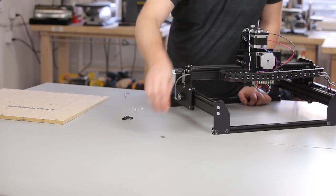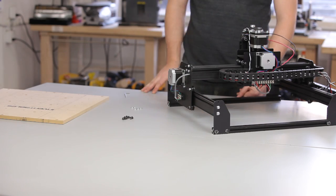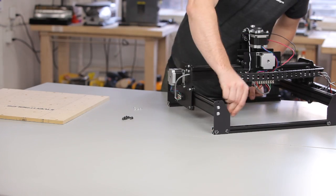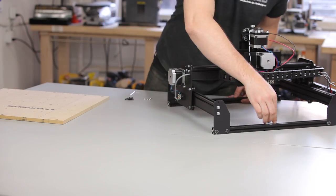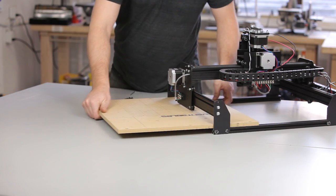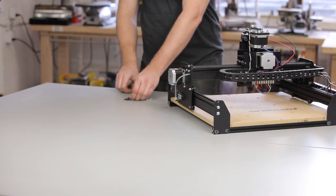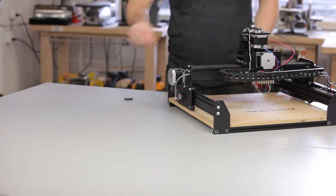Now we're going to put the waste board onto the x-carve. Start by putting two insertion nuts onto the extrusions that hold your y-axis together. Space them so that they're about at the middle of the extrusion.